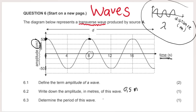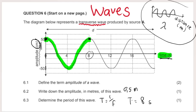They then ask to determine the period of the wave. Using the formula T = 1/f doesn't make sense here because we aren't given frequency. Instead, since time is on the x-axis, we can read the period directly from the graph. From one crest to the next — two consecutive points in phase — we can see that spans eight seconds. Therefore T = 8 seconds. Remember: the unit must be seconds or 's', not an abbreviation like 'sec'.